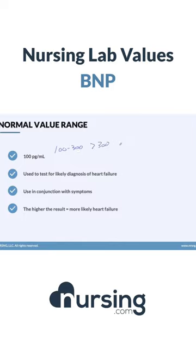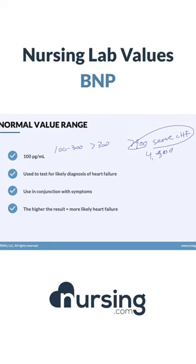Over 300 would be moderate, and then over 900 would be severe heart failure. I've seen levels go as high as 4,500 in patients who have very extreme heart failure, so it's really something we're looking for and watching for in these types of patients.